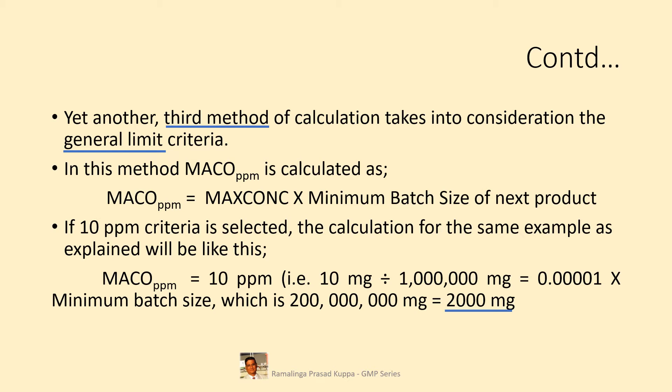This method is adopted when calculations based on therapeutic dose or toxicological data result in unacceptably high or irrelevant carryover figures. In some cases where toxicological data is not available, this method is also suitable. For example, using the therapeutic dosage calculation, if the estimated MACO is 5 million milligrams — equivalent to 5 kg of product — for cleaning with a batch size of 200 kilos, the equipment would definitely look contaminated with the previous product. In such cases, a general limit of maximum concentration concept is utilized, taking into consideration 100 or 10 PPM criteria. The maximum MACO value in this case will be 2000 milligrams only.